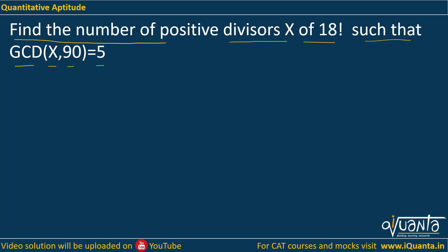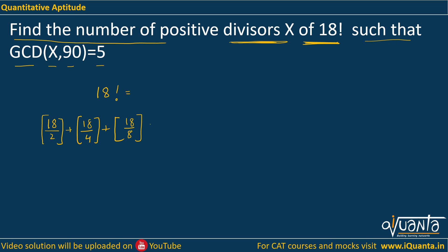First of all, we need to find out the prime factorization of 18 factorial because we are trying to find out its divisors. To find the power of 2 in 18 factorial, it will be 18/2, then 18/4, then 18/8, then 18/16.